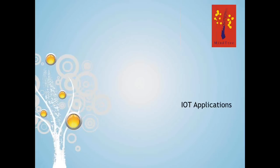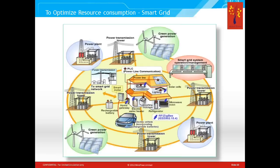Let us see some IoT applications. The first example is the smart grid, where you can use a network of smart objects to conserve resources or to optimize consumption of resources.